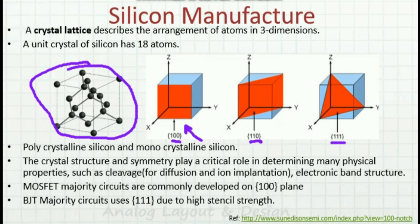Most CMOS wafers are commonly developed in the 1,0,0 plane. Whereas BJT majority circuits are always made out of the 1,1,1 plane, mainly because they need high tensile strength due to higher heating and annealing properties.